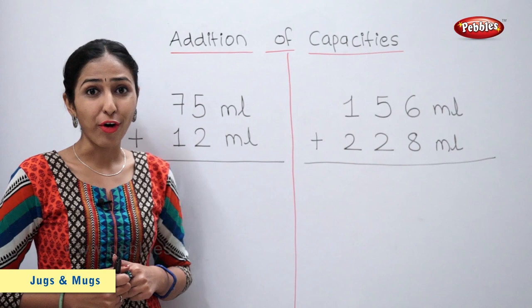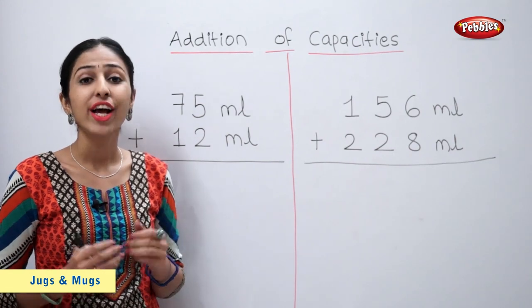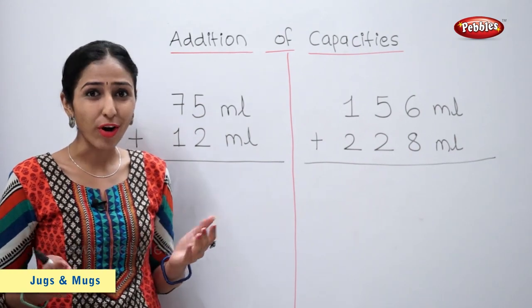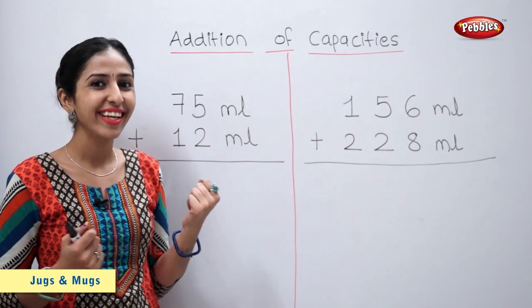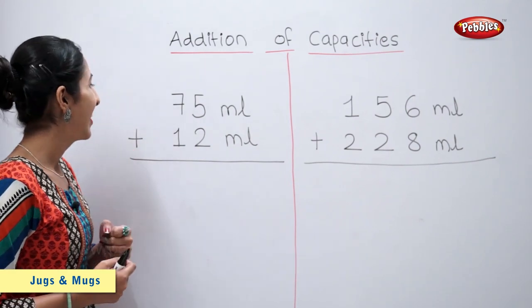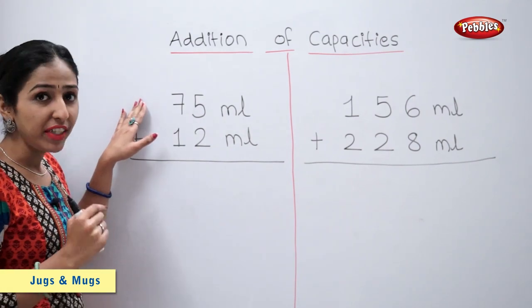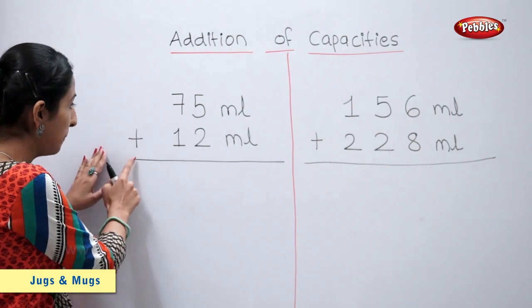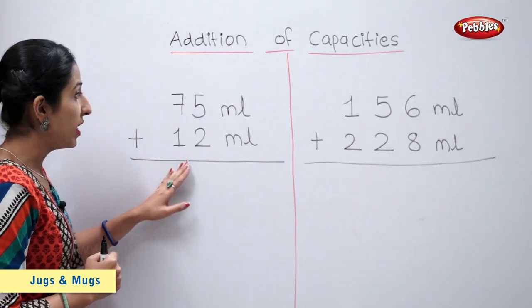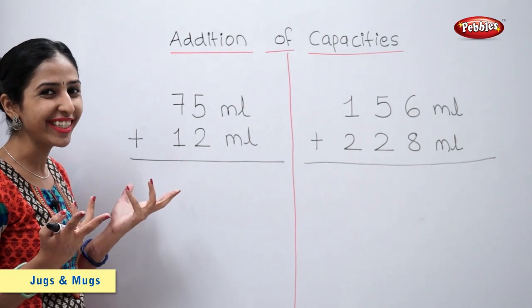Addition of capacities. To add capacities in litres or millilitres, we simply add the numbers and write the unit. Students, now let's solve some examples.